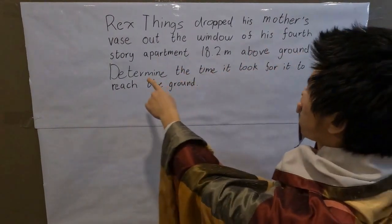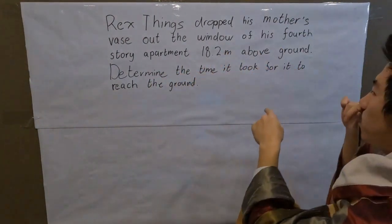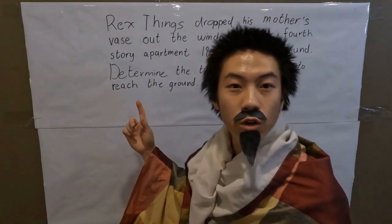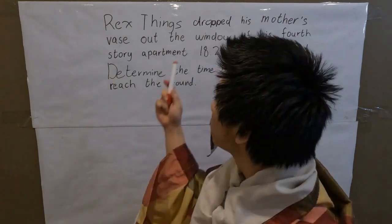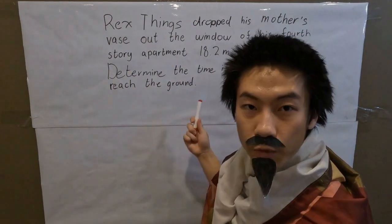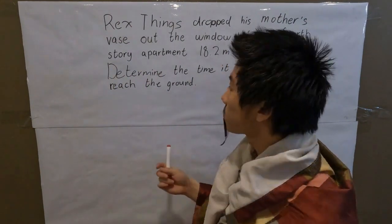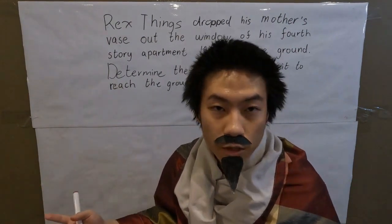18.2 meters above ground. The question wants us to determine the time it took for it to reach the ground. This question is fairly easy. Just by reading the first part, the first sentence of the question, one can already tell a lot about the situation. The first thing every person must know before doing a physics question...